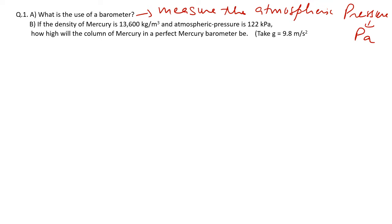Part D: if the density of mercury is 13,600 kg/m³ and the atmospheric pressure is 122 kPa, how high will the column of mercury be in a perfect mercury barometer? This value of h in the barometer formula is what we need to find.